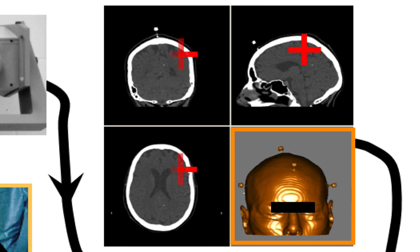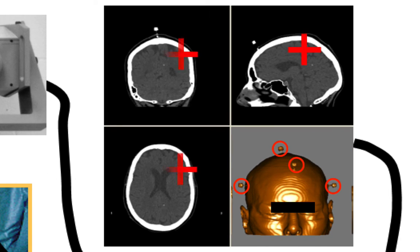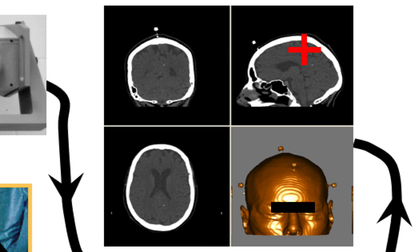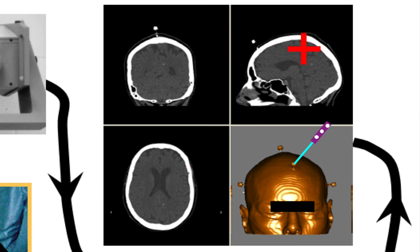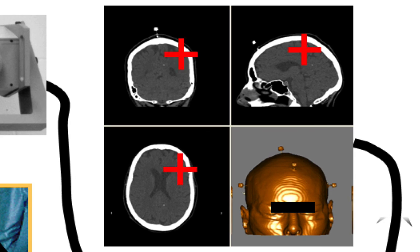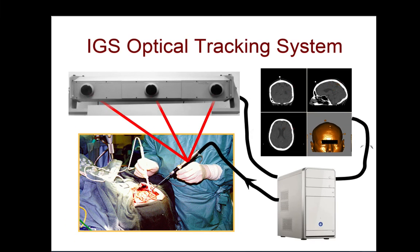You can see in that rendering that there are fiducials on the patient's head. Those fiducials were identified earlier in the OR by placing the probe sequentially in each of the fiducials. The computer then lines up the CT image so that it can show where the probe is located in the three views.